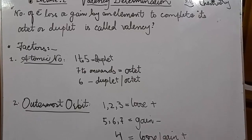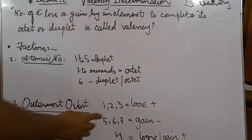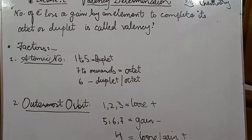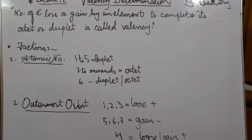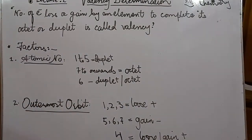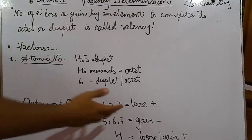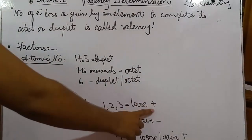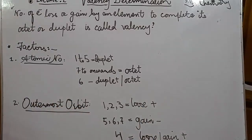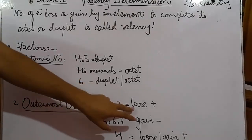The second factor is the outermost orbit, also called the valence shell. For elements which have one, two, or three electrons in the outermost or valence shell, they will always lose electrons, because it is easier to lose electrons when you have fewer of them. Vice versa, when elements have five, six, or seven electrons in the outermost shell, they will gain electrons due to electronegativity. I have used the plus sign for losing and minus sign for gaining.